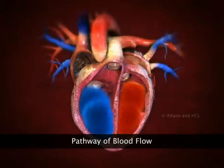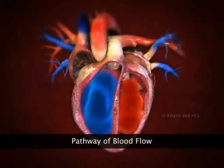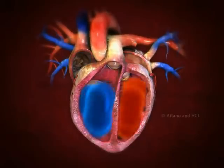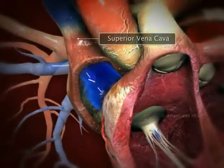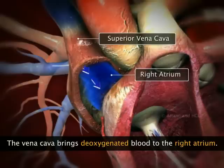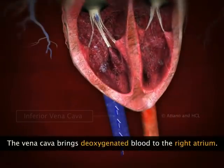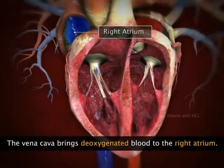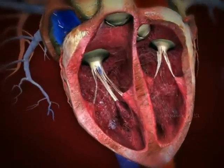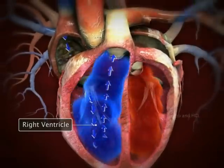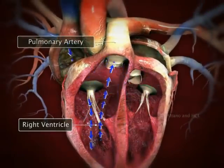Now let's take a look at the route that blood follows while moving within the heart. The superior vena cava brings deoxygenated blood from the upper body into the right atrium, whereas the inferior vena cava brings deoxygenated blood from the lower body into the right atrium. This deoxygenated blood enters the right ventricle via the tricuspid valve, and is then pumped into the lungs via the pulmonary artery.